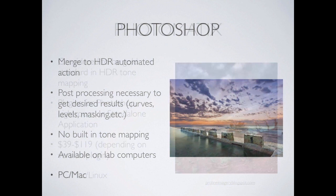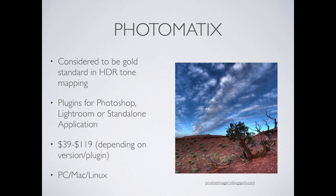There's another software program called Photomatix. It's a standalone application — they also make a plug-in for Lightroom — that does an even better job of tone mapping and post-processing high dynamic range images. It's pretty easy to use. The lower-end version is about $40, the higher-end version is around $100. If you were a real estate photographer taking pictures all the time, using something like this would be really good. It's kind of the gold standard if you're into this sort of thing.